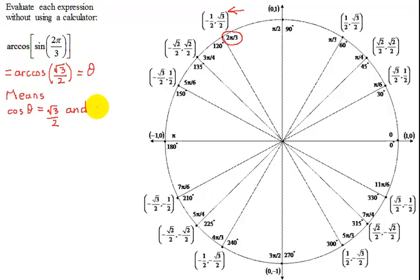What are the restrictions on the inverse cosine? That says that your answer theta has to lie between 0 and π. So I'm restricted to being between 0 and π. So I can either be in quadrant 1, or I can be in quadrant 2.